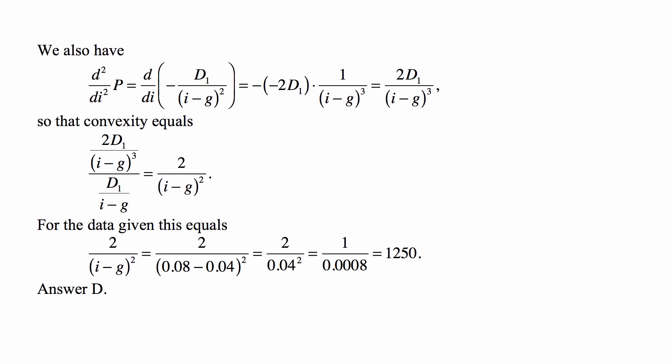It's simply negative 2 times (I minus G) to the negative 3, because we're taking the derivative of (I minus G) to the negative 2nd. So, this is equal to 2D1 over (I minus G) cubed. And when you divide this by the price, you get convexity with respect to the interest rate. And that's 2 over (I minus G) squared.